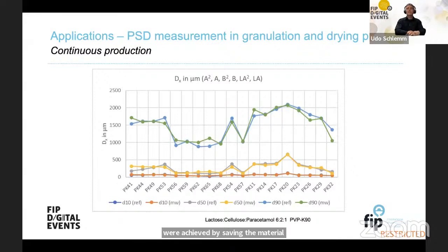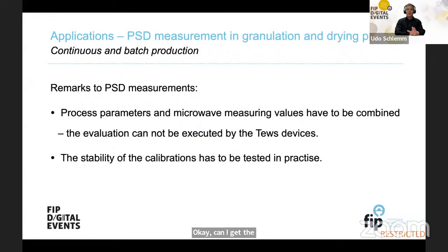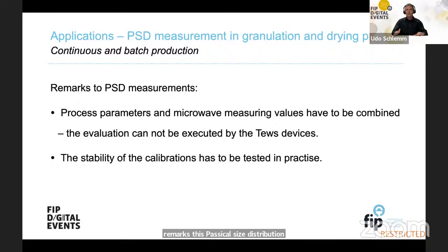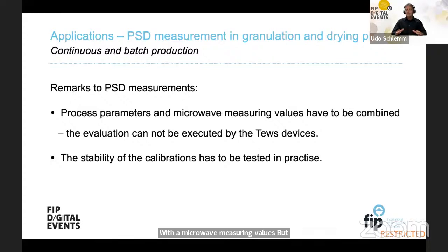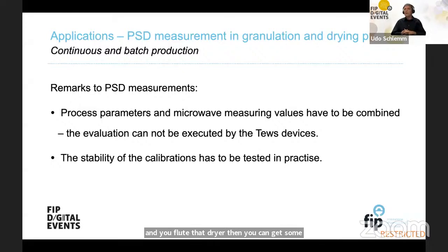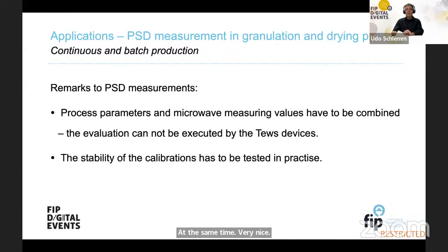Some remarks: this particle size distribution measurement with microwave is really an R&D project and the stability of the calibrations has to be tested. It is also necessary to combine some process parameters with the microwave measuring values. But if you are already doing a moisture measurement in your fluid bed dryer, you can get some information about the particle size at the same time — which is very beneficial.